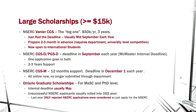Most graduate students get CGSD or PGSD scholarships, which are due in September each year — watch for the department announcement email, as there's always an internal departmental deadline. For master's students, NSERC-CGS-M provides 12 months of support, with a deadline in December each year, and everything is submitted online. We also have OGS scholarship — you don't need to apply separately. Just apply for NSERC-CGS or NSERC-PGS, and if unsuccessful, your application is automatically considered for OGS.